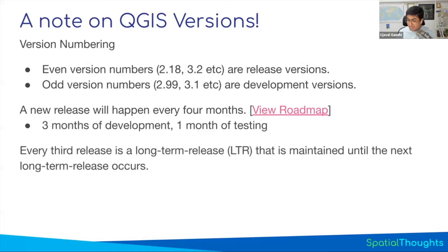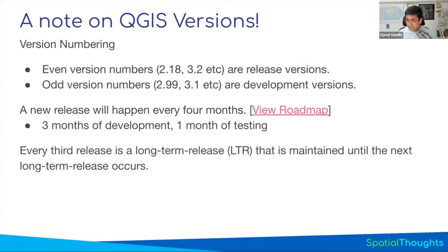So QGIS also maintains a release called LTR — Long-Term Release. There's a release that happens once a year, and that release is maintained as-is for one year. Whenever new bugs are discovered they get fixed, but there are no changes to core functionality. That means if you write a plugin, Python code, or workflow for a particular version, you can be sure it won't break for the next year.